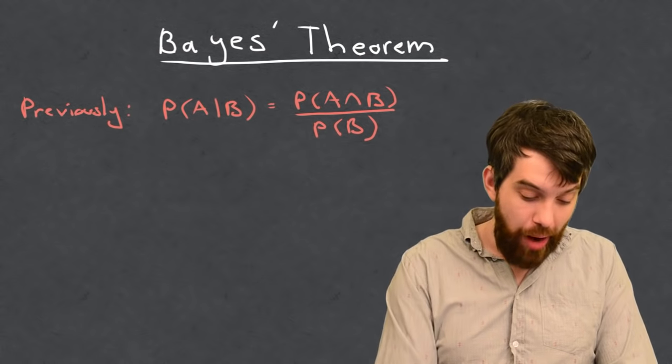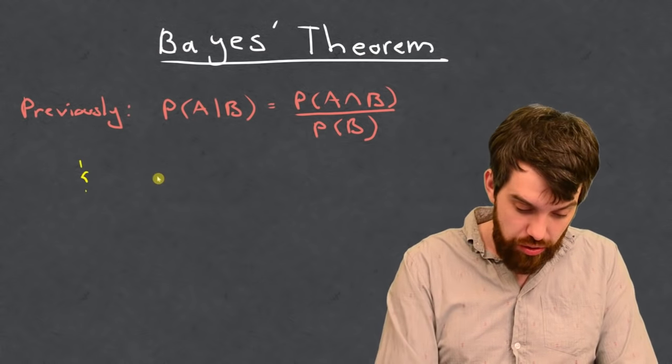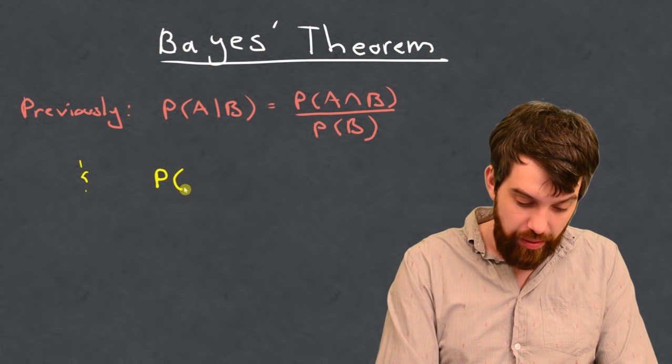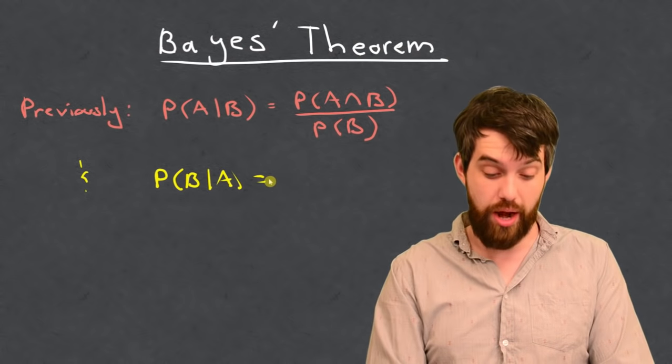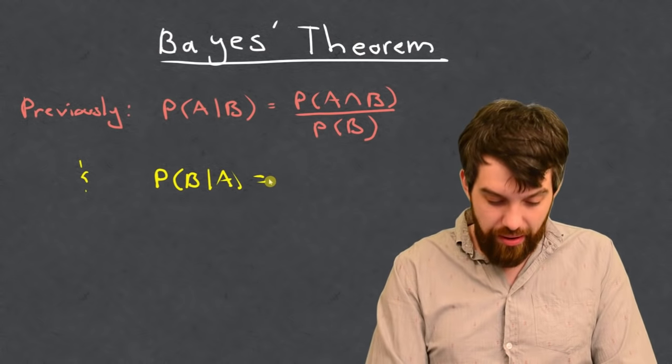Now, I'm going to rearrange this. I'm going to go the other way around. So, if I have this, I can also therefore look at what happens if I take the probability of B given A. So, the same thing, but just flip the other way around.